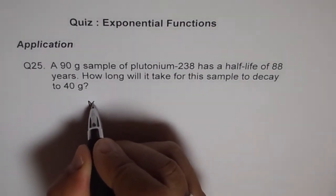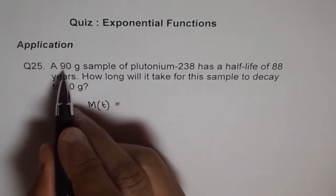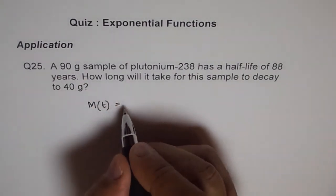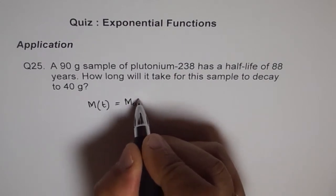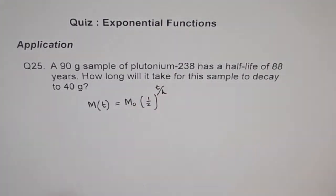So we say mass remaining with time is original mass, which is 90 grams. So we formalize original mass into half over T over half-life.